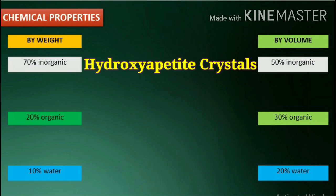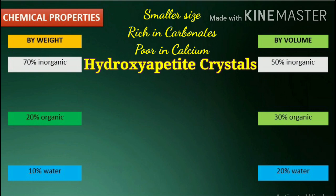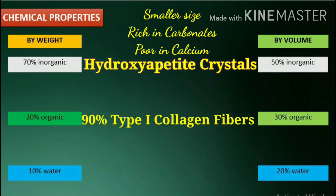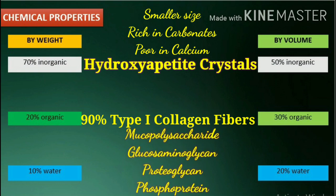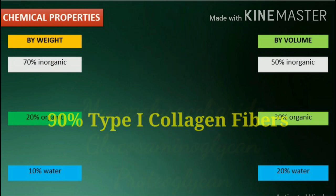The inorganic portion is in the form of calcium hydroxyapatite crystals. Crystals are similar in shape to those of enamel. They are smaller in size, rich in carbonate and poor in calcium when compared with those in enamel. The collagen fibers, constituting 90% of the organic matrix, are mainly made up of type I collagen and ground substance of mucopolysaccharides, glycosaminoglycans, proteoglycans, and phosphoproteins with small amounts of citrate, chondroitin sulfate, insoluble protein and lipids.